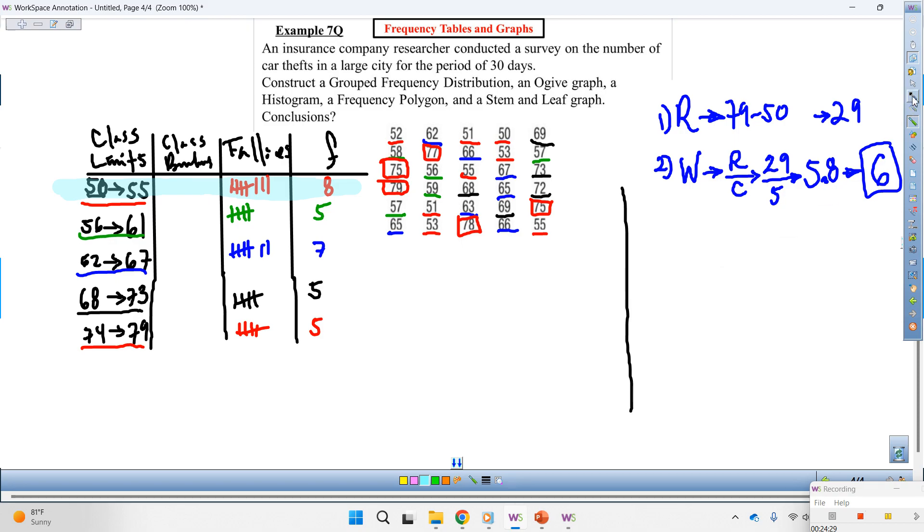So I'm going to start with five. Right? Because it starts with five. Yeah? So I'm looking for numbers from 50 to 55. How many numbers do I need to find? Eight of them. Yes? All right.